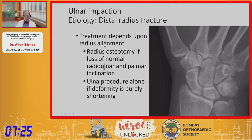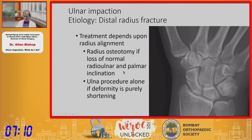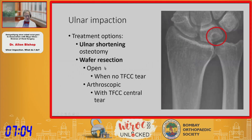Ulnar impaction etiology is varied. In distal radius fractures in particular, treatment depends upon radius alignment. If the radius is short but not altered in terms of slope and radial inclination, an ulnar shortening or another ulnar procedure may be satisfactory. Otherwise, a radius osteotomy would be the first recommendation.